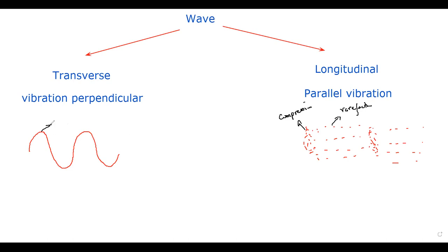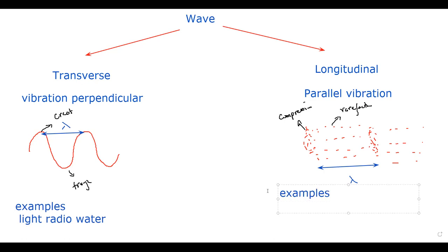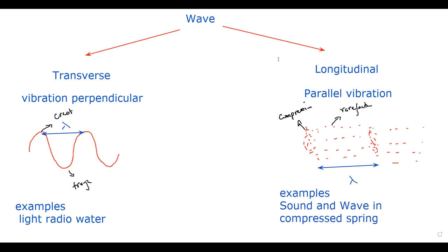In a transverse wave, the high region is known as a crest and the bottom is known as a trough. The distance between two successive crests is known as the wavelength. Similarly, the distance between two successive compressions in a longitudinal wave is also known as the wavelength. Examples of transverse waves include light waves, radio waves, and water waves. Examples of longitudinal waves include sound waves and waves in a compressed spring.